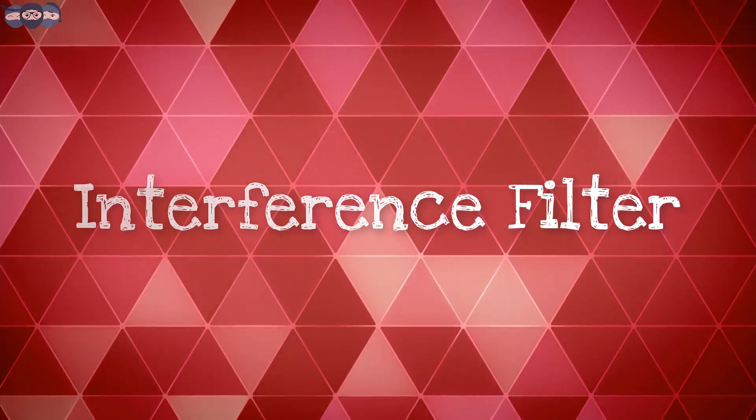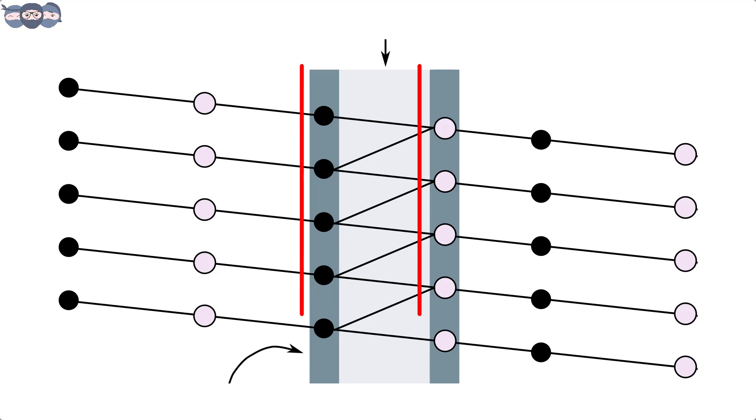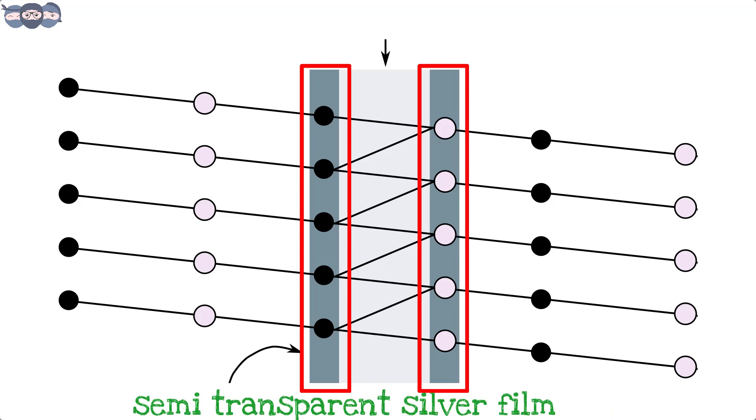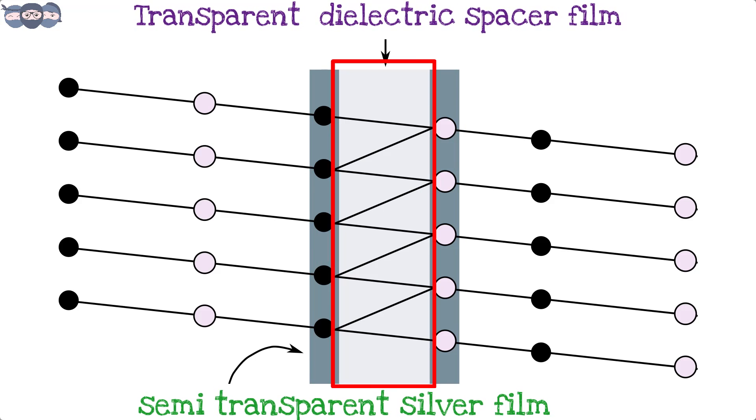The filter using this property of interference is called an interference filter. It is constructed using two semi-transparent layers of silver deposited on a transparent glass plate. A transparent dielectric film separates these layers.